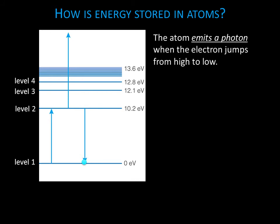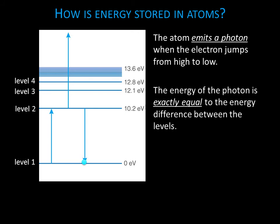If the electron jumps from a higher level to a lower level, the atom must give up energy. The energy released is in the form of light, or a photon. The energy of the emitted photon will be exactly equal to the energy difference between the energy levels.